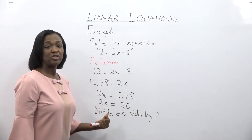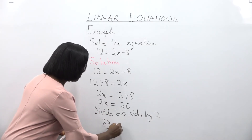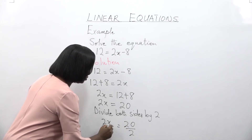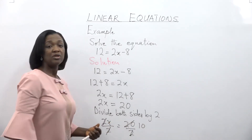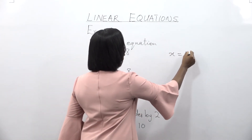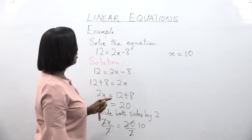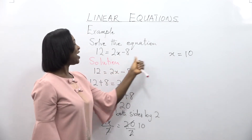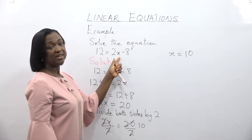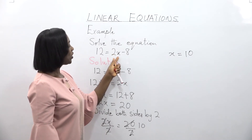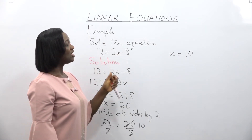If you divide 2x by 2, the coefficient becomes 1, so we get x. That means x is equal to 10 in this equation. Let's check if that answer is correct — put the value of x back into the original equation. x is 10, so 2 times 10 is 20. 20 take away 8 is equal to 12. So our answer is correct.